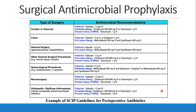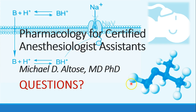This is just an example of some SCIP guidelines showing different kinds of surgeries, what the preferred antibiotic would be, as well as some alternatives if the patient has a beta-lactam allergy or a known history of methicillin-resistant Staphylococcus aureus — MRSA. We'll stop there. Please contact me with any questions and we'll continue in the next recording.